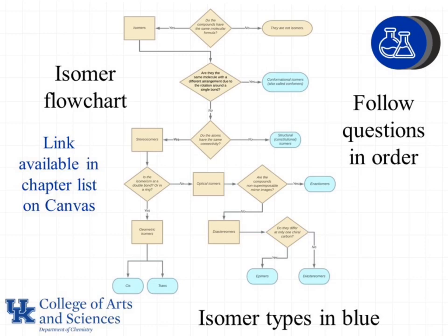However, you will not have this available on the exam. It's very important to follow the questions in order — start at the top and work your way down. Some students will try to skip ahead because they think they know what it is and instead misidentify an isomer type.